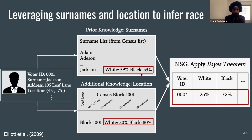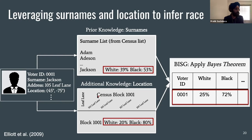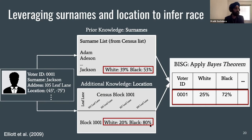We can think of this as prior knowledge of the probability that this person is white or black. We also know the address, which we've geocoded, and we can map that onto a census block. The census provides demographic information about each block — in this case the census block is 80% Black, which increases the probability that this voter is Black. Using Bayes' theorem, we update the prior knowledge from the surname with the additional knowledge from the location to arrive at a final probabilistic estimate of race. We then aggregate these probabilistic estimates across voters in a precinct to get the final racial composition per precinct, which serves as input to ecological inference.